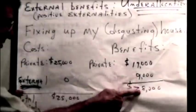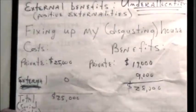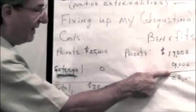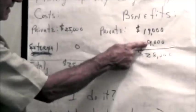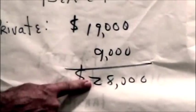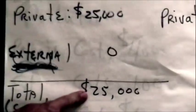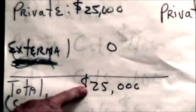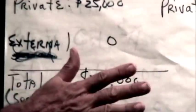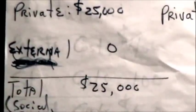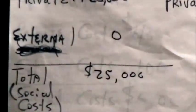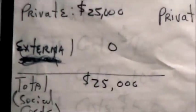So, if we look at the social benefits, the social benefits are $19,000 private and $9,000 external. Which means the total social benefit is $28,000 and the social cost is only $25,000. From society's point of view, it should be done. The resources should be allocated to fixing up my house. And if it were to happen, the world would be a better place. But would I do it? I would not. Why not?